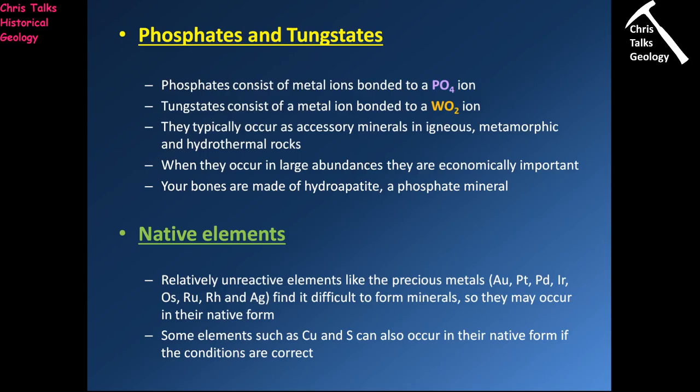Phosphates and tungstates are relatively common accessory minerals in igneous, metamorphic and hydrothermal rocks, but not commonly in sedimentary rocks. When they occur in large quantities they are economically important. Phosphates are quite significant — one of the most common phosphate minerals is apatite, which is calcium phosphate and the material our bones are made from. Our bones are actually made from hydroxyapatite.